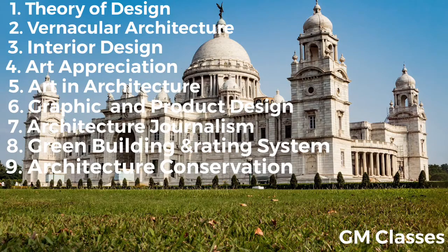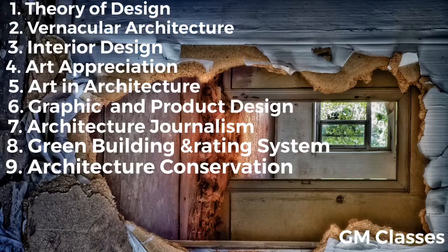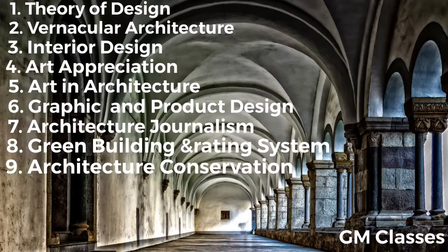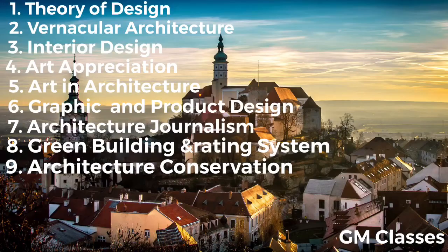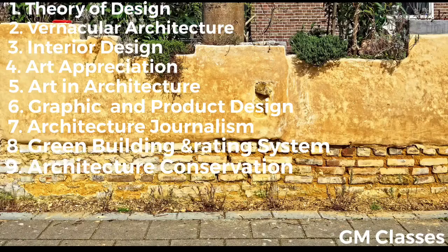Ninth: Architecture Conservation. This elective takes you back to the roots and genesis of architecture. It talks about various eras, unfolding facts about right practices and characters in conservation. This elective can be taught at building level as well as settlement level, which can further be stretched to make guidelines for conservation in a particular region. Various practical aspects can also be incorporated, like material preparation, material application, and old technologies.